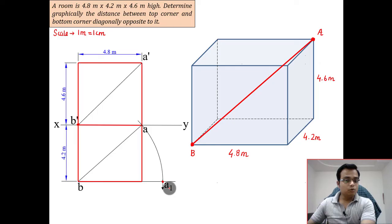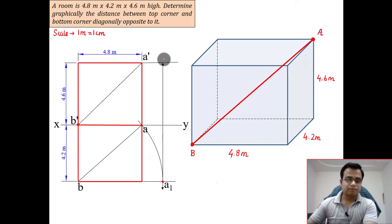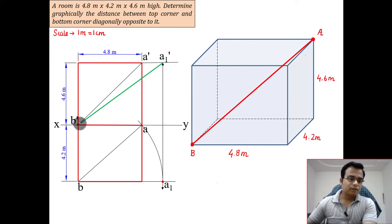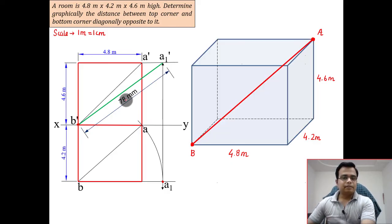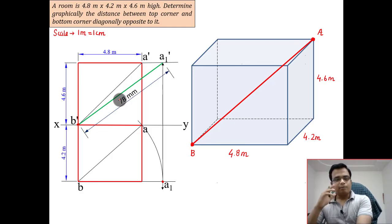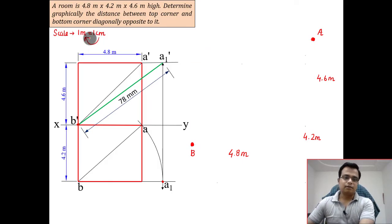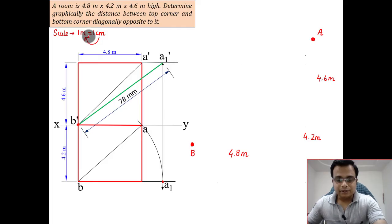This is the new location A1. This is old A, this is old A dash, and this is new A1. Here we'll find the new A1 dash. When you join A1 dash with B, you'll have the true length. Measure this: it's 78 millimeters, which is 7.8 centimeters, which on conversion to meters becomes 7.8 meters.